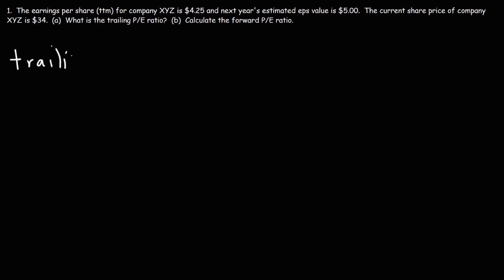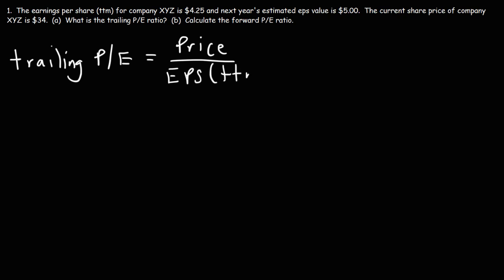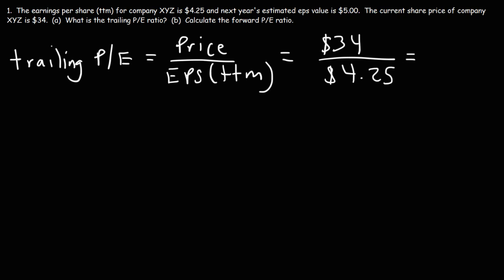The trailing P/E ratio can be calculated using this formula: it's equal to the current price of the stock divided by the EPS value, where TTM stands for trailing 12 months — the EPS value over the previous 12 months. The current price is $34 and the EPS is $4.25, so dividing those two numbers gives us a trailing P/E ratio of 8. This means the price of the stock is 8 times earnings.